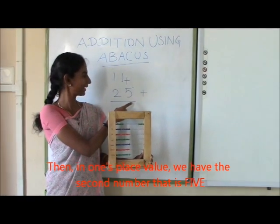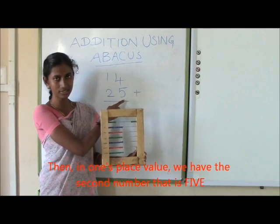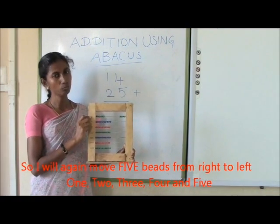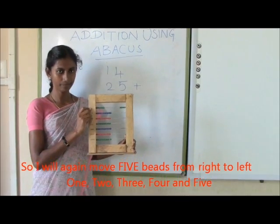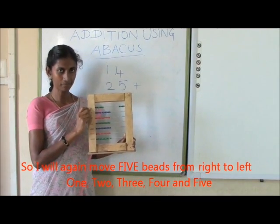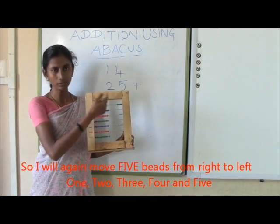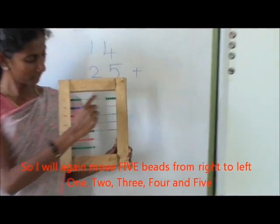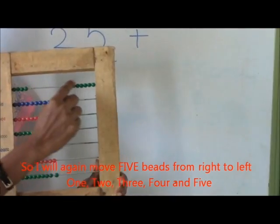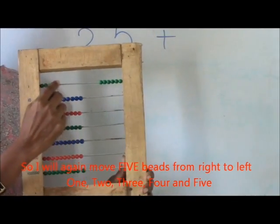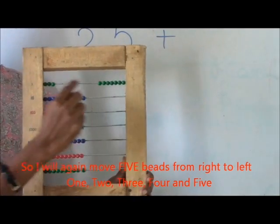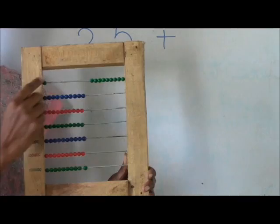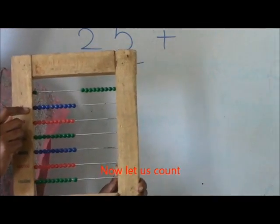In the ones place value, the second number is 5. So I will again move 5 bits from right to left: 1, 2, 3, 4, 5.